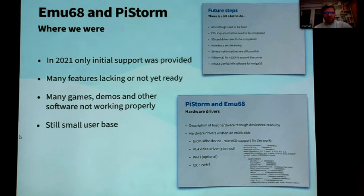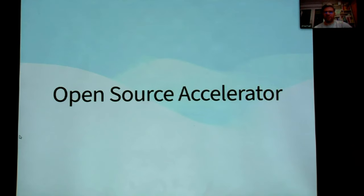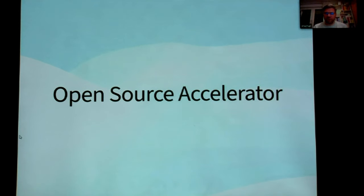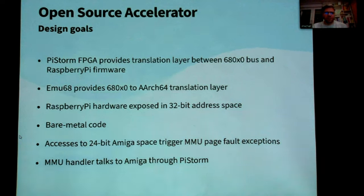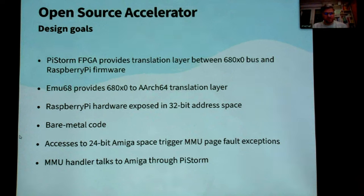Since then, many things have changed or improved. What we have now is the open source accelerator — both Mo68 and PyStorm are open source. We give them for free and we are happy if people use them, build them, and do whatever they like. PyStorm is an FPGA with additional hardware providing a translation layer between the Motorola 68K bus and Raspberry Pi. Mo68 provides the translation layer between Motorola code and ARM processor code.